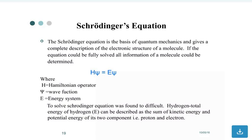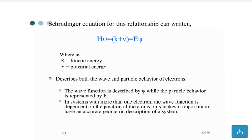For hydrogen, total energy can be described as the sum of kinetic energy and potential energy of its two components: proton and electron. The Schrödinger equation for this relationship can be written as HΨ = (K + V)Ψ = EΨ, where K is kinetic energy and V is potential energy.